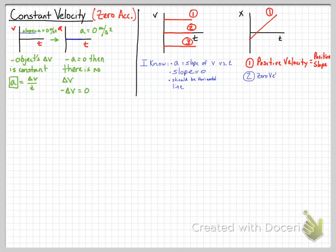Looking at the second line, we have a zero velocity — the line is on zero, so I should have a zero slope. When I draw the line on my graph, I have a zero slope line for the position versus time graph. Then for the negative velocity one, it's in the negative quadrant, so it has a negative velocity. On the position versus time graph it should have a negative slope, because the slope of a position versus time graph is velocity.